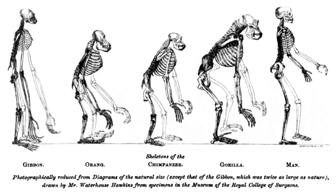Typically, observable instances of evolution are examples of microevolution — for example, bacterial strains that have antibiotic resistance. Microevolution over time leads to speciation or the appearance of novel structure, sometimes classified as macroevolution. Macro and microevolution describe fundamentally identical processes on different scales.